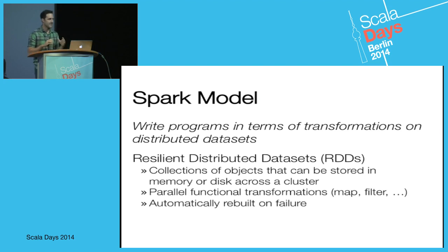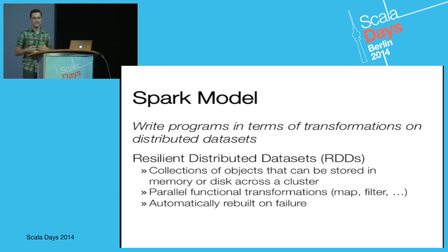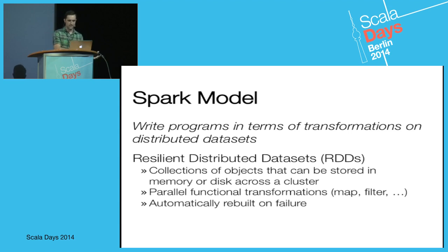Since it's running on so many machines, you're often going to have failures. What Spark does is hide those failures from you by keeping track of lineage and automatically rebuilding the transformations when machines are lost.